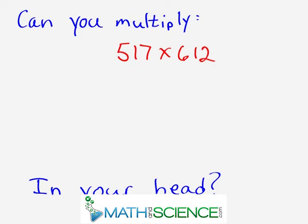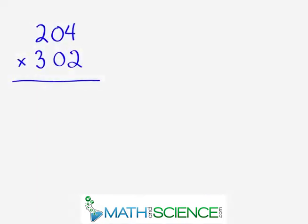Can you multiply 517 times 612 and do it in your head? Keep watching to find out how. In this section, we're going to learn a very impressive and very powerful technique to multiply any three-digit number times any other three-digit number. This method works for really any number — it's not a specific type or class of number. That's what makes it so versatile and so powerful.